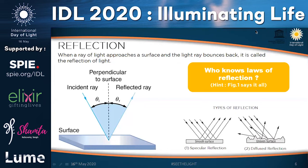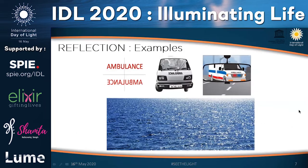Looking at the image of sea waves, we can see clearly visible white sparkling dots on some parts of the image, while other parts appear brighter. This is because of the phenomenon of diffused reflection — as light falls on an uneven surface, it reflects back at different angles, producing this type of result.